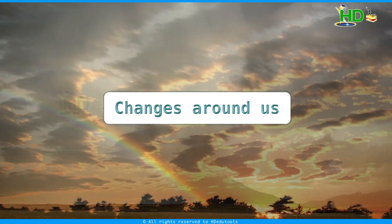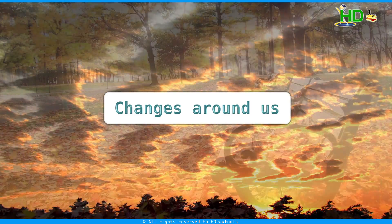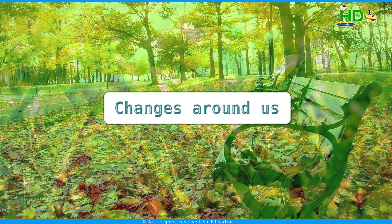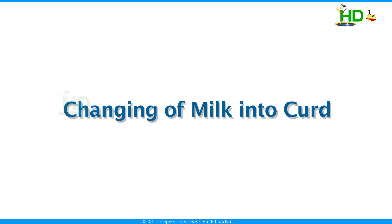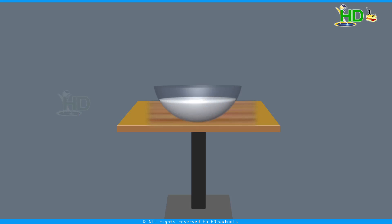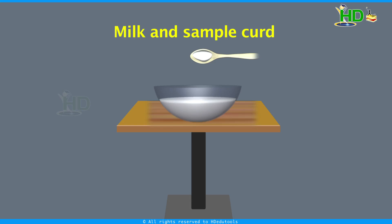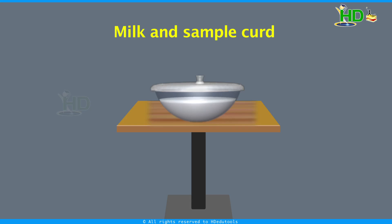We are going to observe some changes and the reasons for these changes. We know a simple change: changing of milk into curd. Do you know how milk can be converted into curd? Curd is prepared by adding a very small quantity of curd — that is, sample curd — to a bowl containing warm milk. The milk is stirred well, then the bowl is covered with a lid and kept still and undisturbed for a few hours.